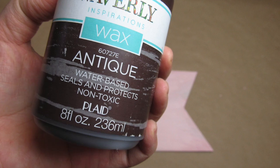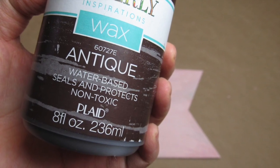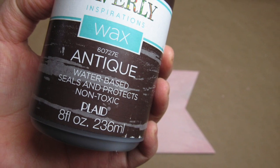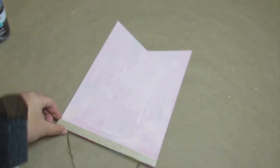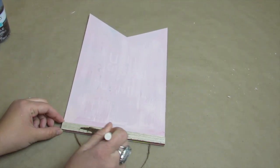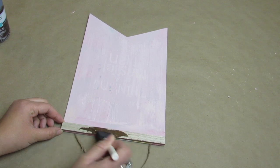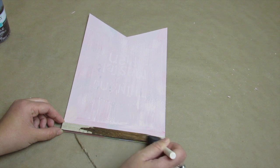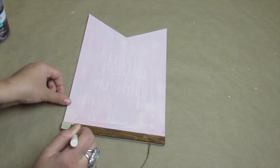Once that first coat is done, I'm taking Waverly's wax in Antique, and I'm going to take my sponge brush and just kind of smear it over where that light wood is. The sponge brush holds in a lot of paint, but it worked fine for this.